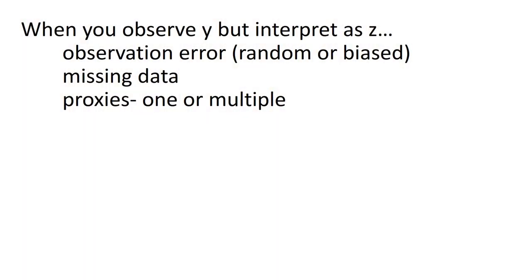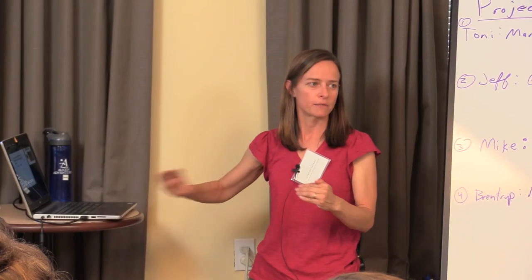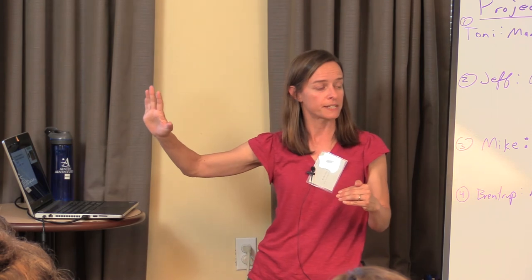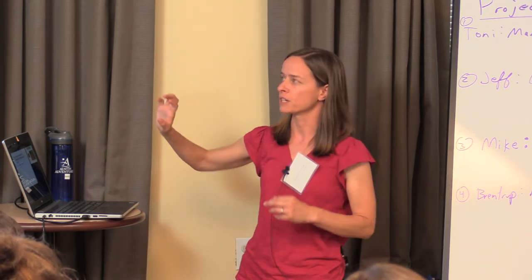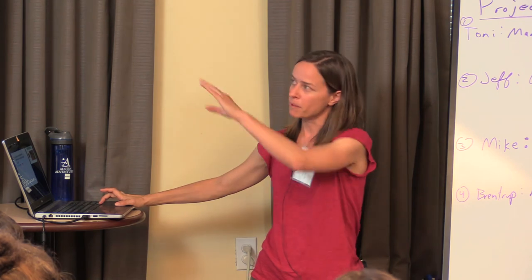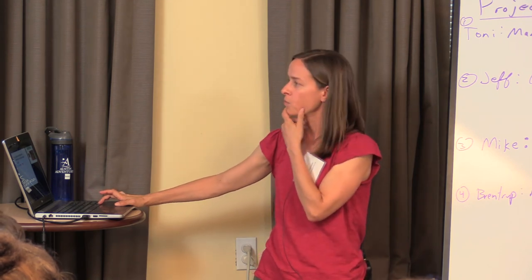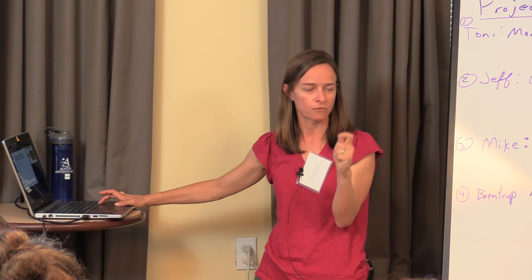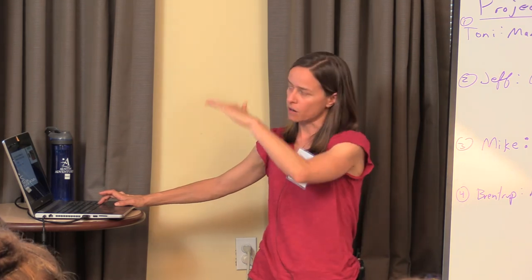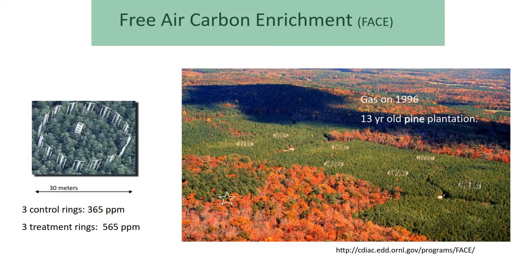Latent variables: when you observe y but interpret it as z. We already know we do that with our data model — we're observing data and expecting it to come from some true distribution. Missing data and proxies where you have one or multiple things informing your response variable are more common. I was going to end with an example of the breadth of one latent data approach.